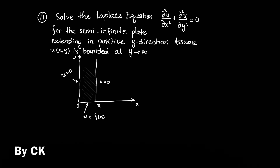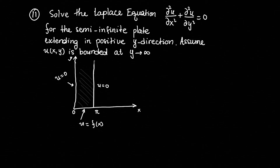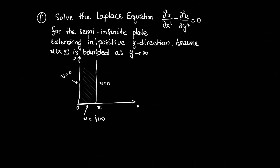Welcome back. We're going to solve the Laplace equation, but now we have something new. This is problem number 11 from the textbook. We have the equation for a semi-infinite plate — semi-infinite means the plate is bounded on some sides, but on top it extends to infinity in the positive y direction. It also says: assume that u(x,y) is bounded as y approaches infinity, which we'll address later.